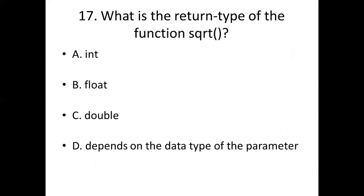Seventeenth bit: What is the return type of the square root function? Option A: int. Option B: float. Option C: double.